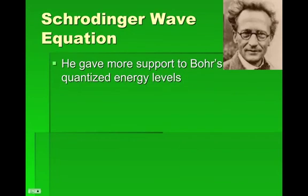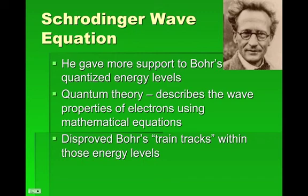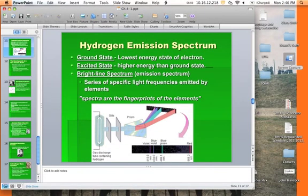The Schrödinger wave equation — I don't really care that you know much about this, except that Schrödinger came along and gave more support to Bohr's model and quantum theory. He supported the energy levels but not the specific orbits. I used to call these things train tracks — like the electrons were trains that couldn't get off the tracks — but he definitely supported the energy levels, which we still study today. We currently have seven possible energy levels for electrons. The orbit idea was proven wrong, but Bohr still did an awesome job and is well-respected. From here, we go into electron configuration.